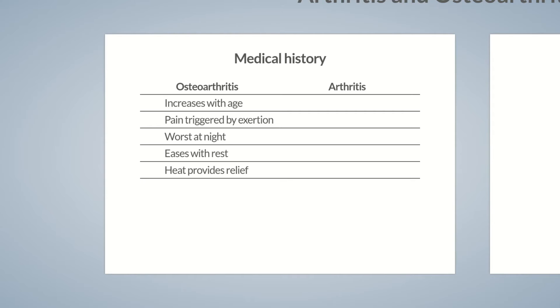Most arthritis types are caused by autoimmune diseases. They can occur in any age group, but show a certain age-specific dependency on the basis of the underlying causative arthritic disease.